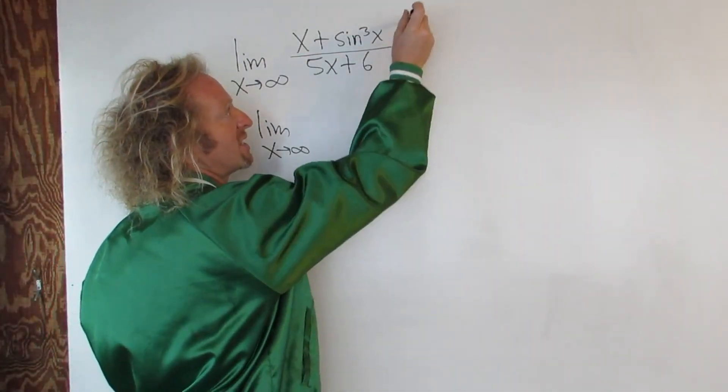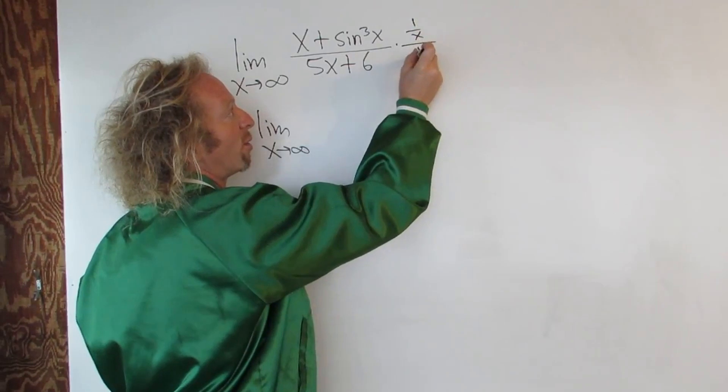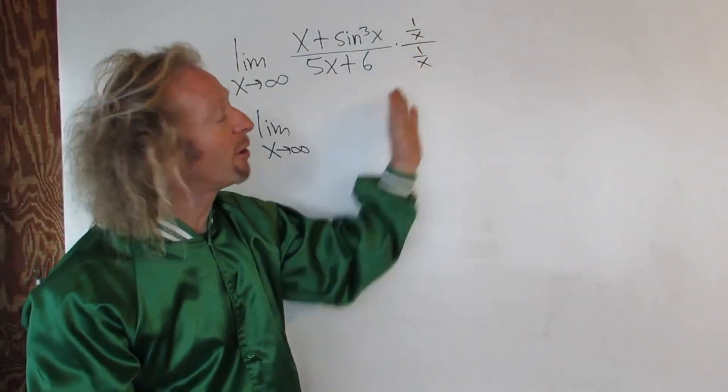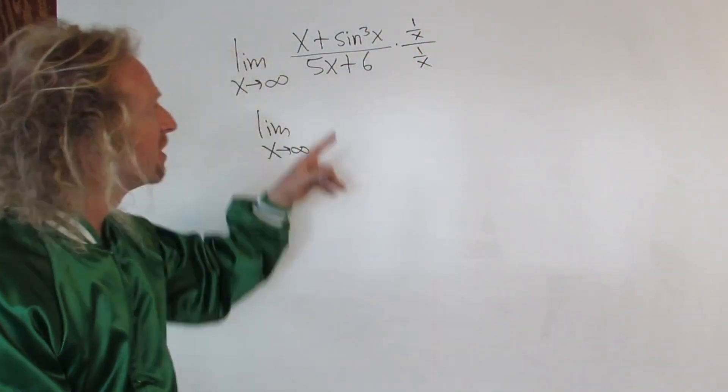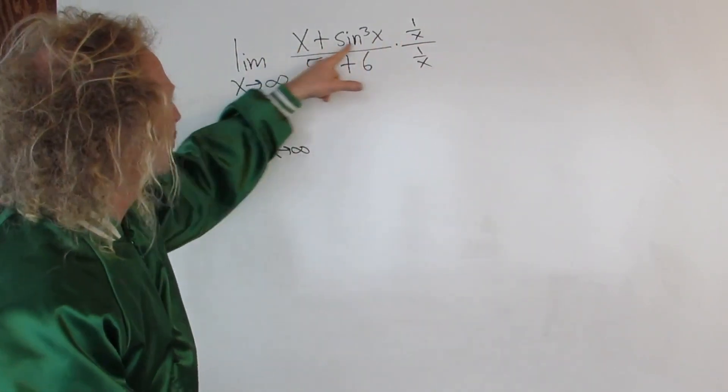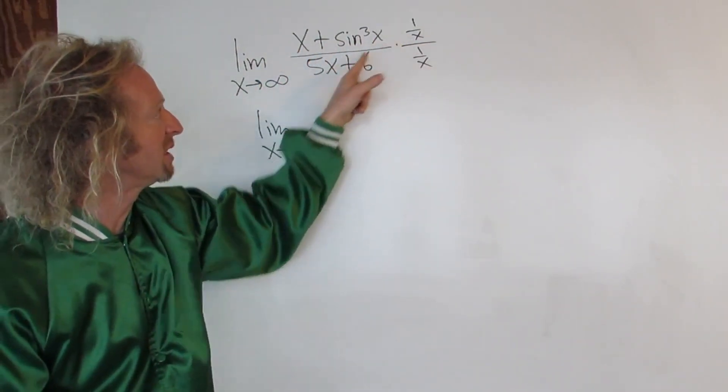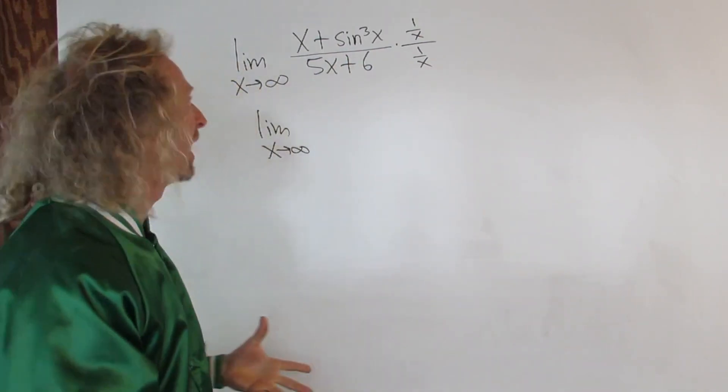It's the same thing as taking this and multiplying by 1 over x times 1 over x. You're allowed to multiply something by 1, right? So if we multiply by this, essentially we're distributing the 1 over x to each piece. And essentially we're dividing by x.